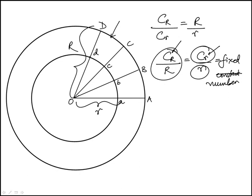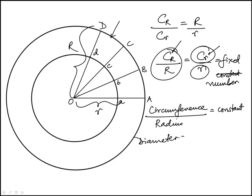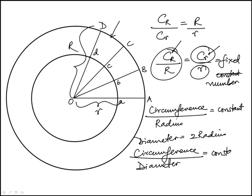And that means no matter what the size of the circle is, the ratio of the circumference to its radius is a constant number. And if we want to write this in terms of diameter, diameter is twice radius. That would also mean that the circumference to the diameter is some constant number, meaning it's the same number for all circles, doesn't matter how large they are.